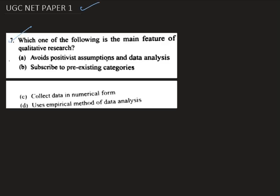The first question here is which one of the following is the main feature of qualitative research? We are given four options. The first option says avoids positivist assumptions and data analysis. The second option is subscribe to pre-existing categories. The third option is collect data in numerical form. The last option is uses empirical method of data analysis.